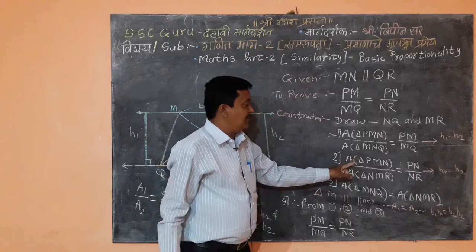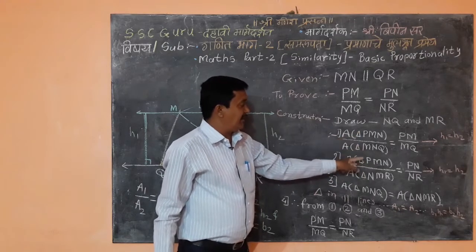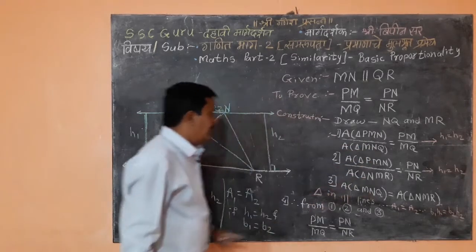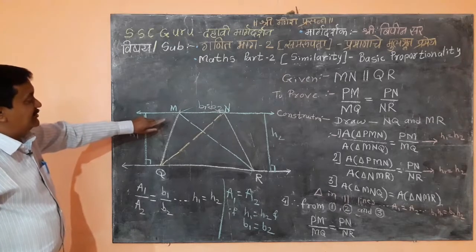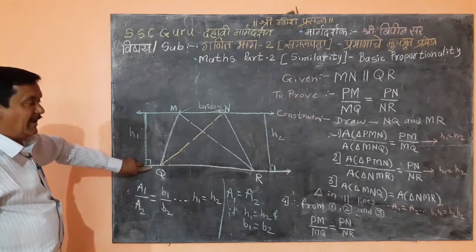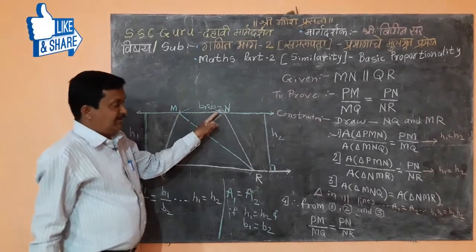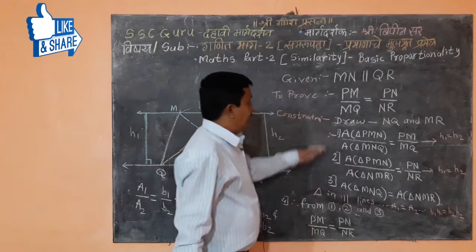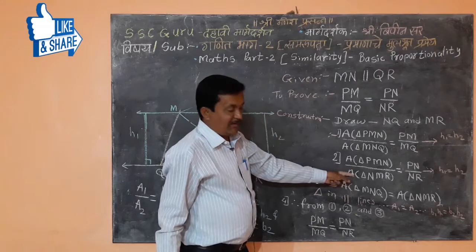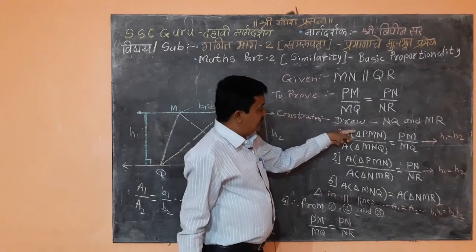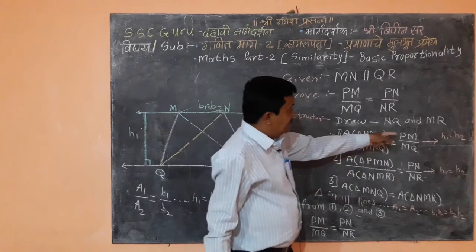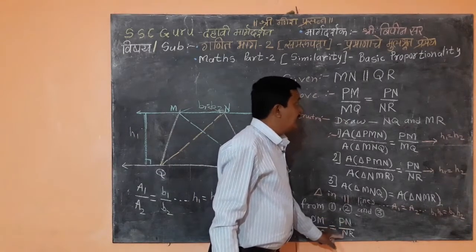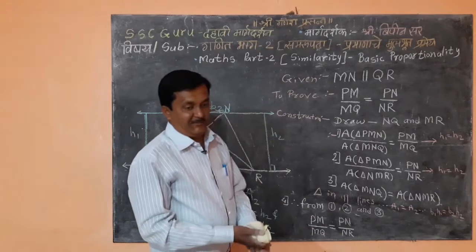Area of triangle PMN is equal to area of triangle PMN. Because these two triangles are the same. And area of triangle MNQ and area of triangle MNR is also equal, because these two triangles are situated between two parallel lines on the same base. Therefore, from equations 1, 2, and 3, the left-hand sides are equal. Therefore, PM upon MQ is equal to PN upon NR. So you can understand how easy it is.